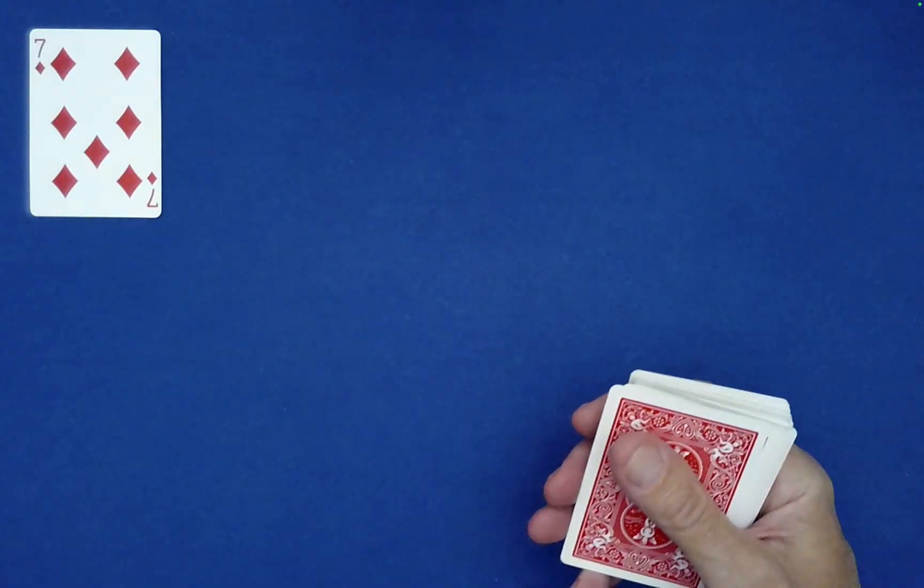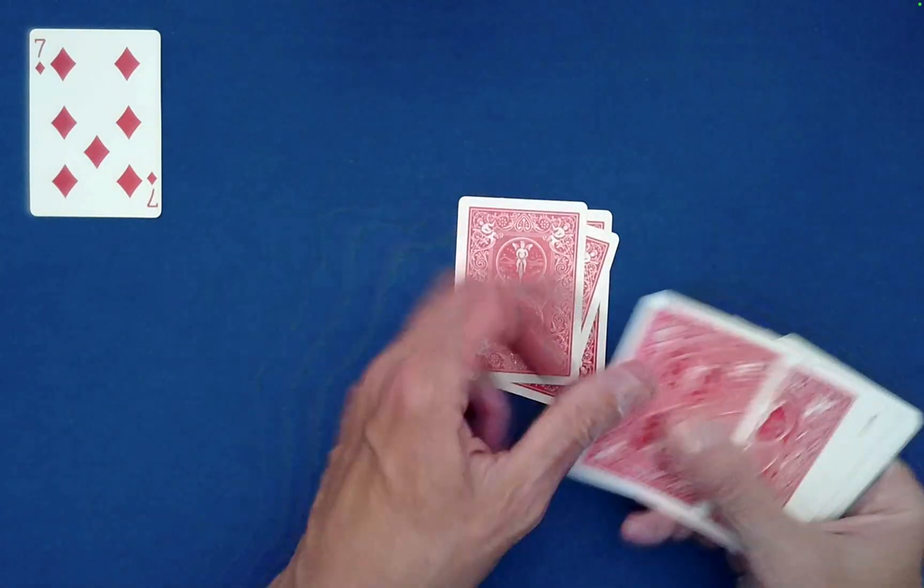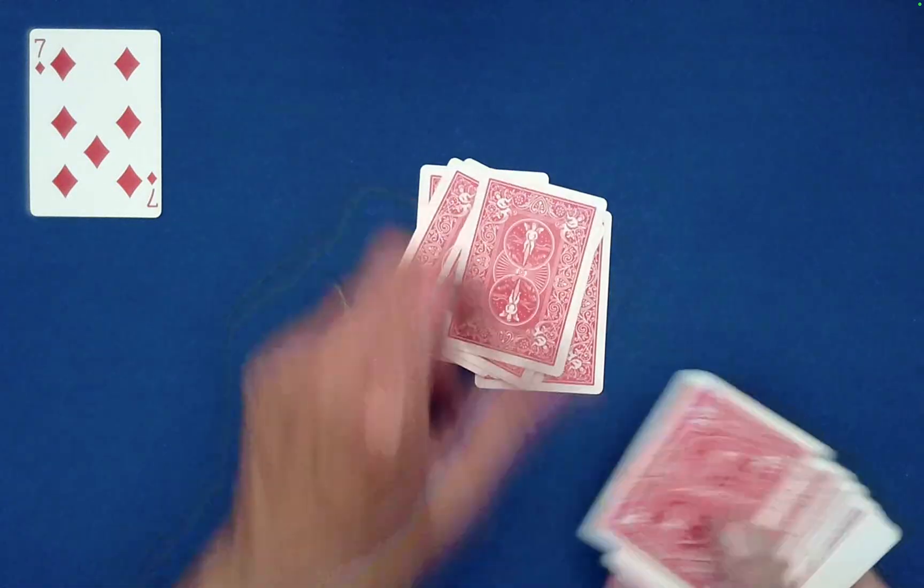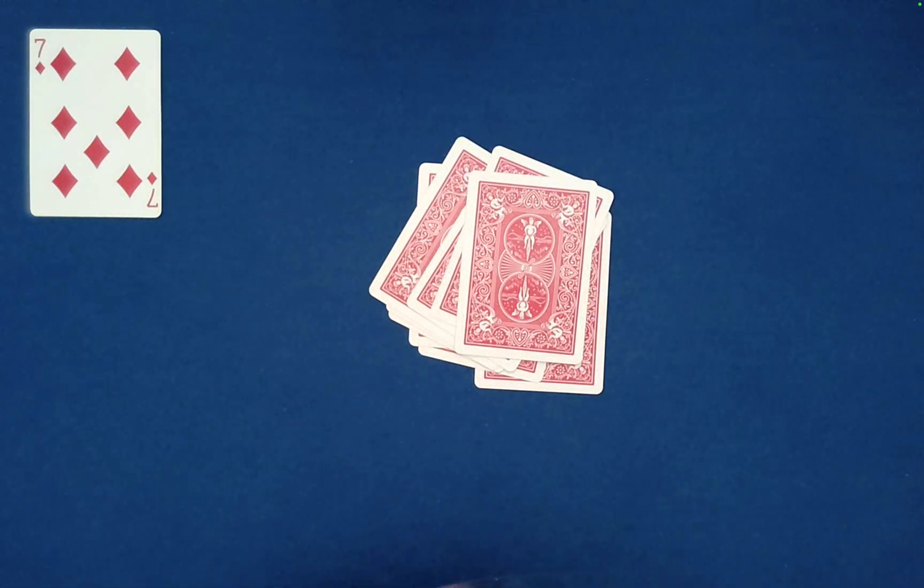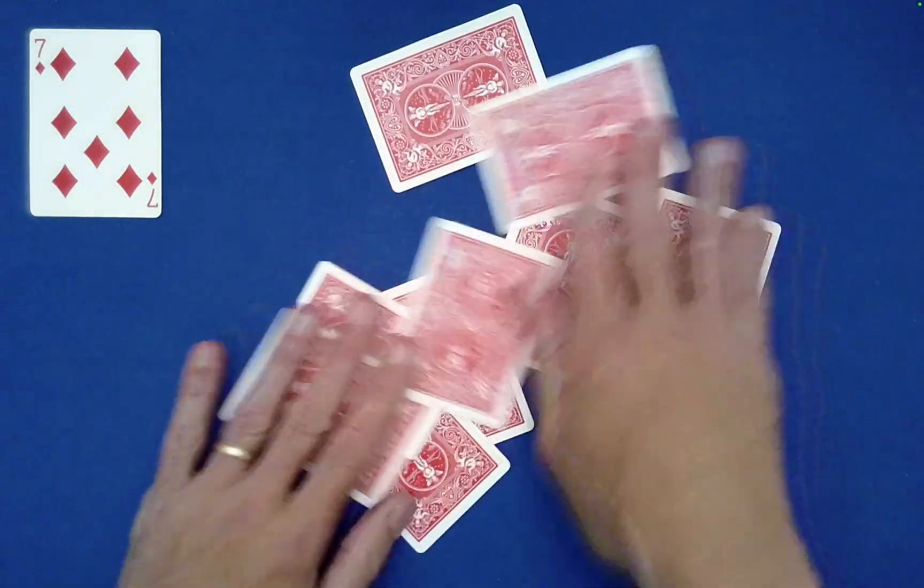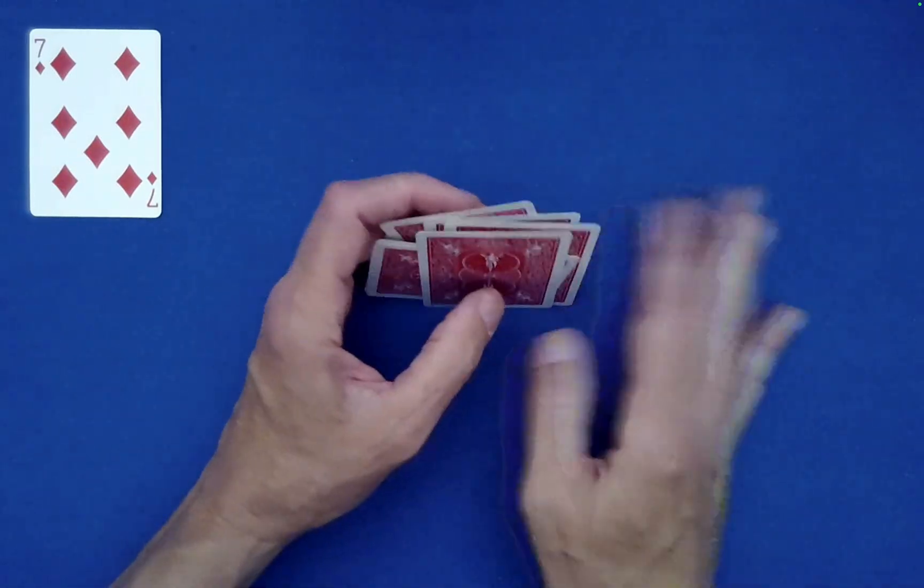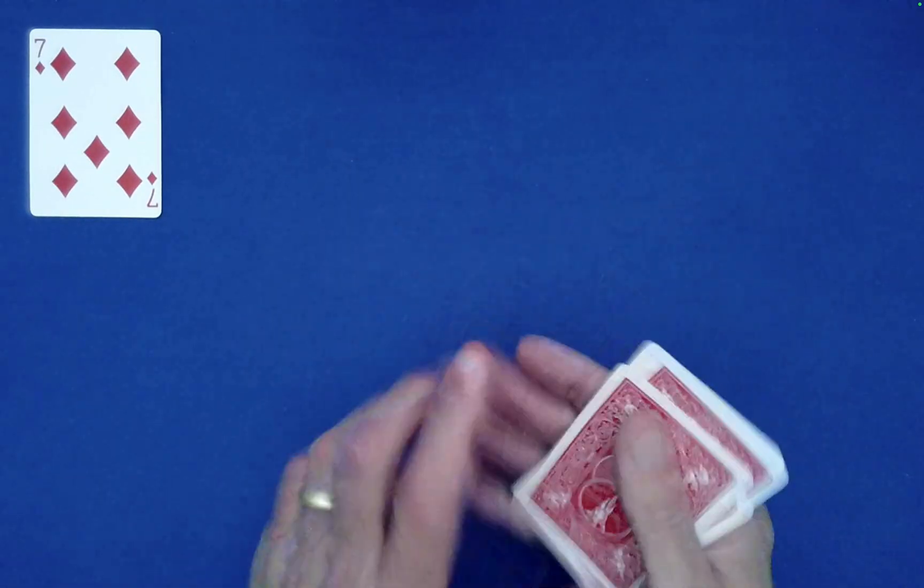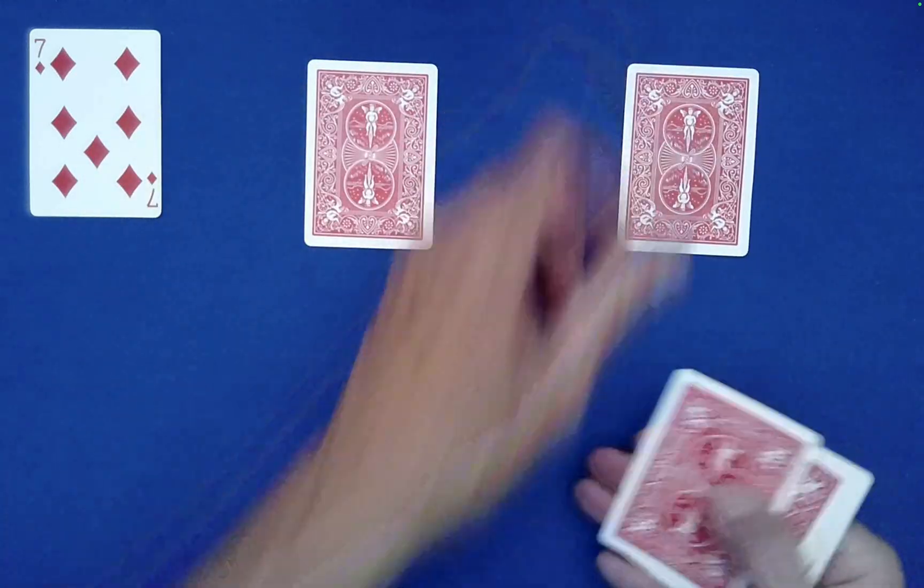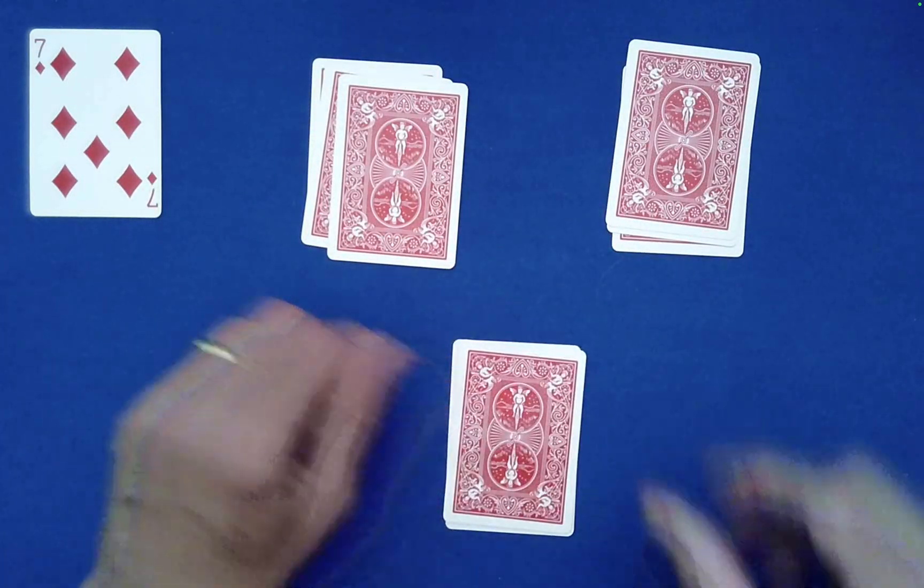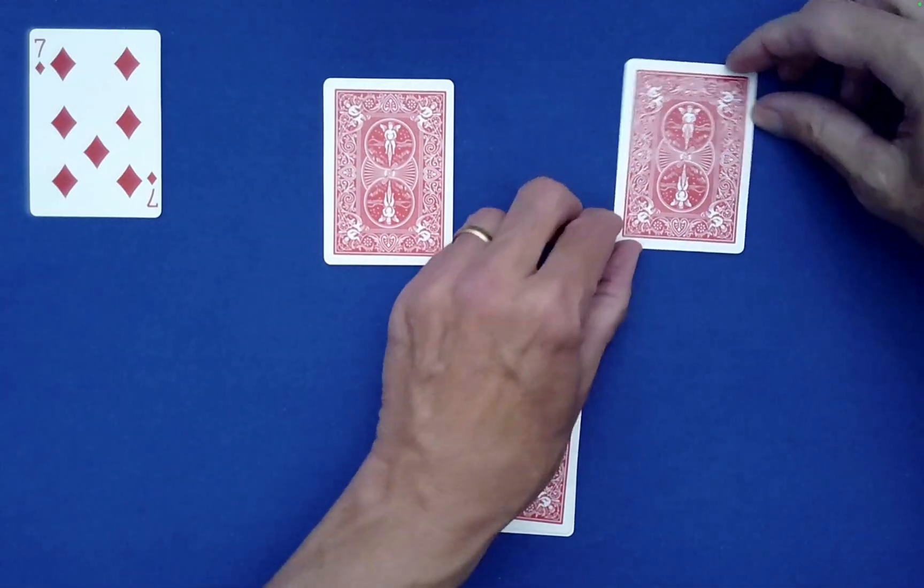Then just choose nine random cards. One, two, three, four, five, six, seven, eight, nine. Okay, and then just mix these cards as much as you would like. When they're sufficiently mixed, go ahead and just deal them out into three piles of three cards each however you would like.